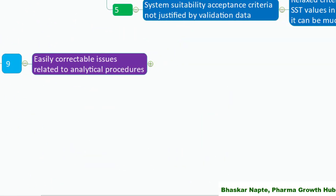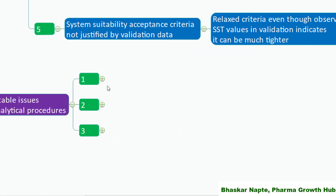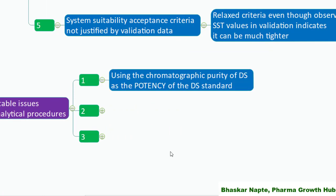Here are the easily correctable issues related to analytical procedures. The first one: using the chromatographic purity of the drug substance as the potency of the drug substance standard. There is a subtle difference between purity and potency of a drug substance. Do not use chromatographic purity as a potency value. Have a suitable SOP to calculate the potency and calculate it according to that SOP.